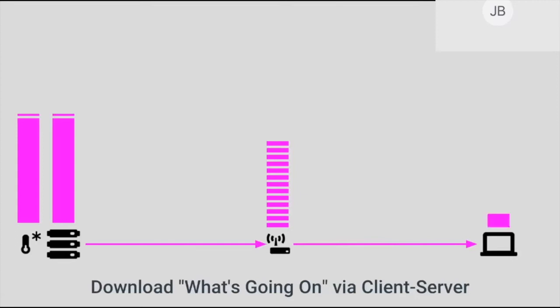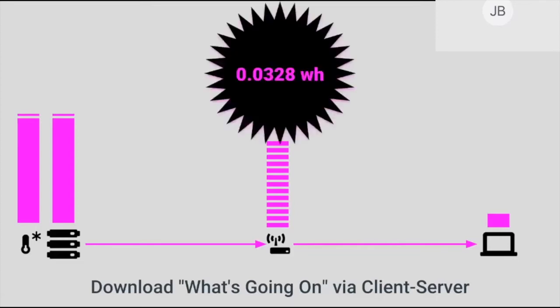What about our laptop? The laptop is really the least of our worries in this system, and that is going to become important later. Our energy hog here is definitely the server and the data center where it lives — not the laptop. So for this client-server downloading-a-song scenario, how much electricity do we use? A whopping 0.0328 watt-hours to download What's Going On by Marvin Gaye from a server — that is a little more than half of 1% of your cell phone's daily charge, which I cannot depict here because it's just too small.